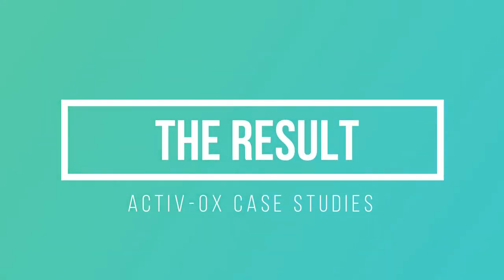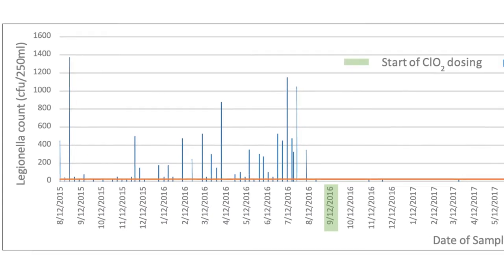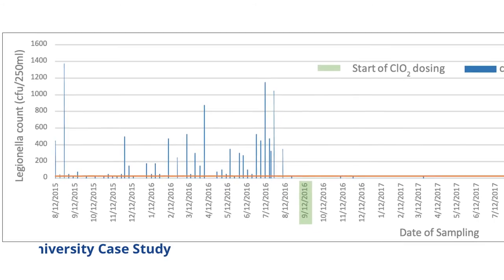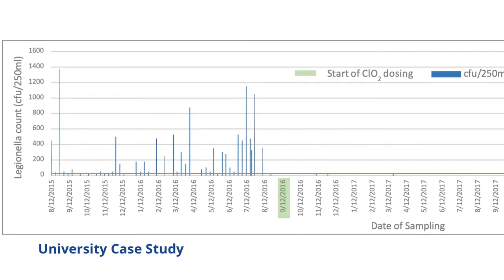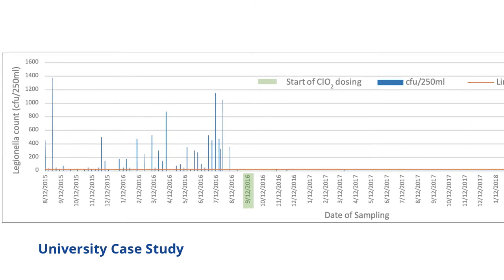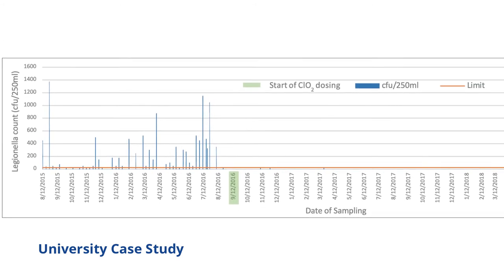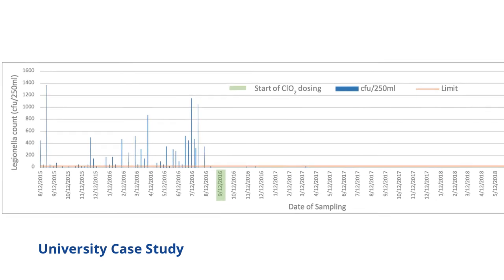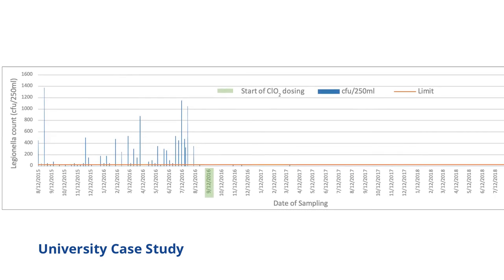So how about the result? Here we see real data from an Activox installation at a prestigious British university. The chart shows a three-year testing period for Legionella with over 1,500 samples taken before and during dosing, which highlights the immediate and sustained control achieved by using Activox.